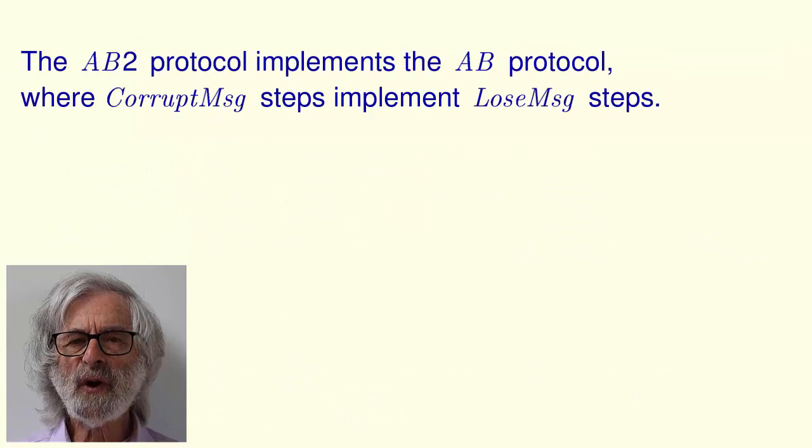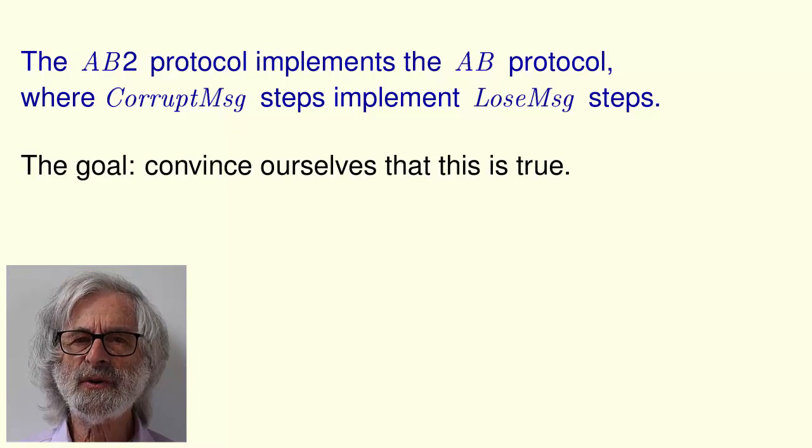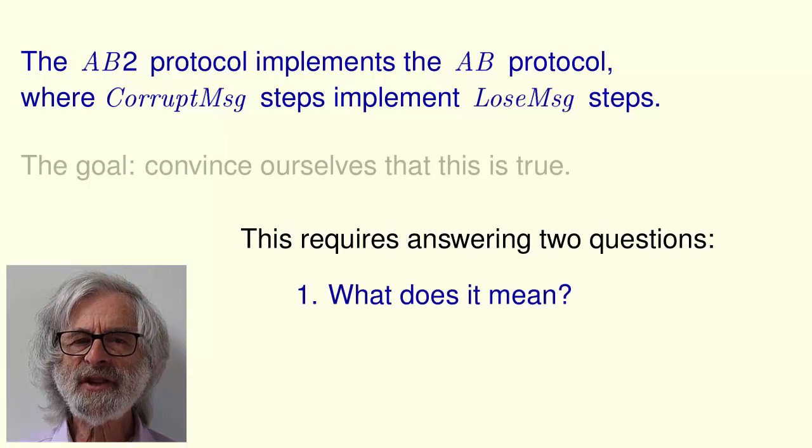The AB2 protocol implements the AB protocol, where corrupt message steps implement lose message steps. Our goal now is to convince ourselves that this is true. Reaching it requires answering two questions. The first is: what does it mean? And the second is: how do we check it?